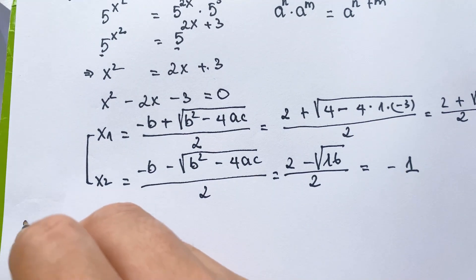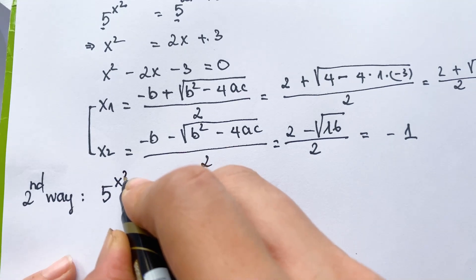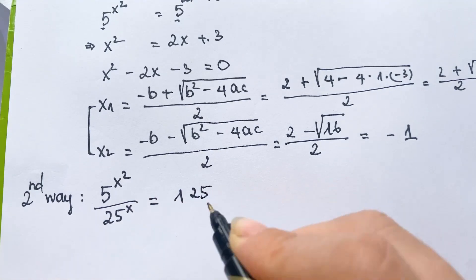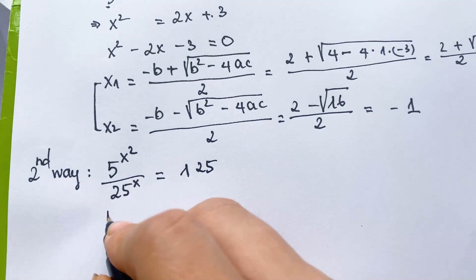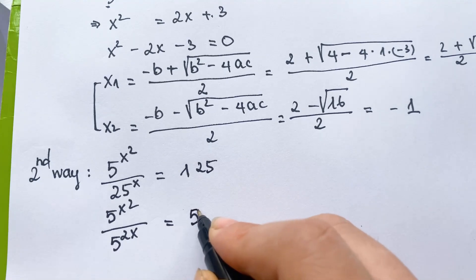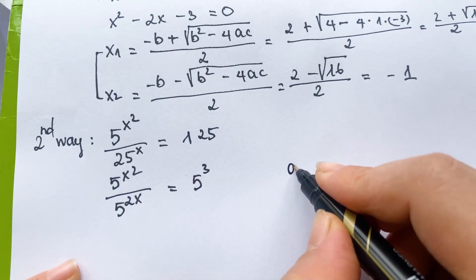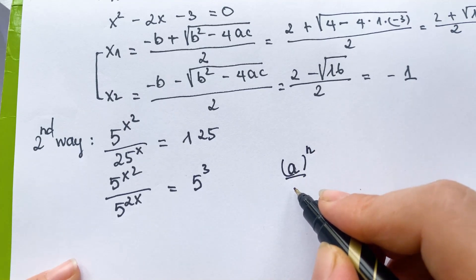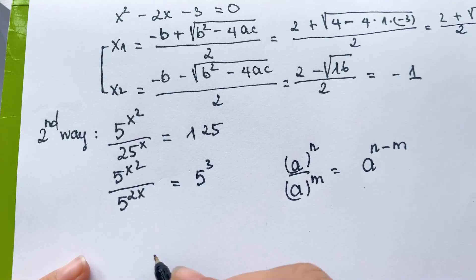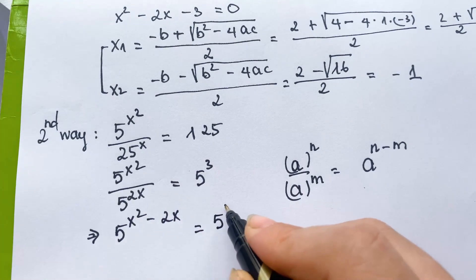For the second way, we rewrite the equation as 5 power x squared over 25 power x equals 125. So this becomes 5 power x squared over 5 power 2x equals 5 cubed. We apply the exponential rule: a power n over a power m equals a power n minus m. Therefore, 5 power x squared minus 2x equals 5 cubed.